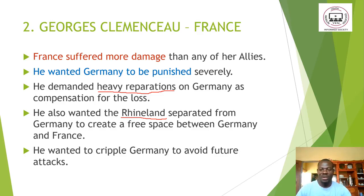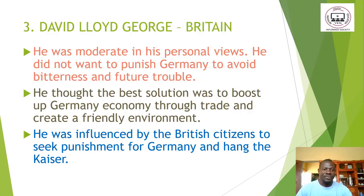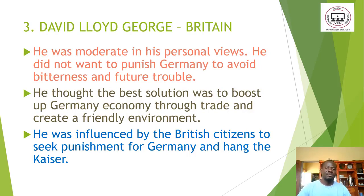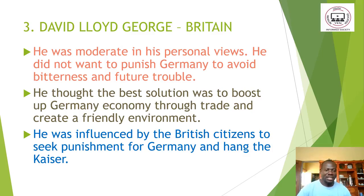David Lloyd George from Britain was moderate in his personal views. He did not want Germany to be punished harshly, to avoid future trouble. His thinking was that the best solution was to build Germany's economy through trade and by creating a friendly environment. However, he was influenced by British citizens who sought punishment for Germany and wanted to hang the Kaiser.